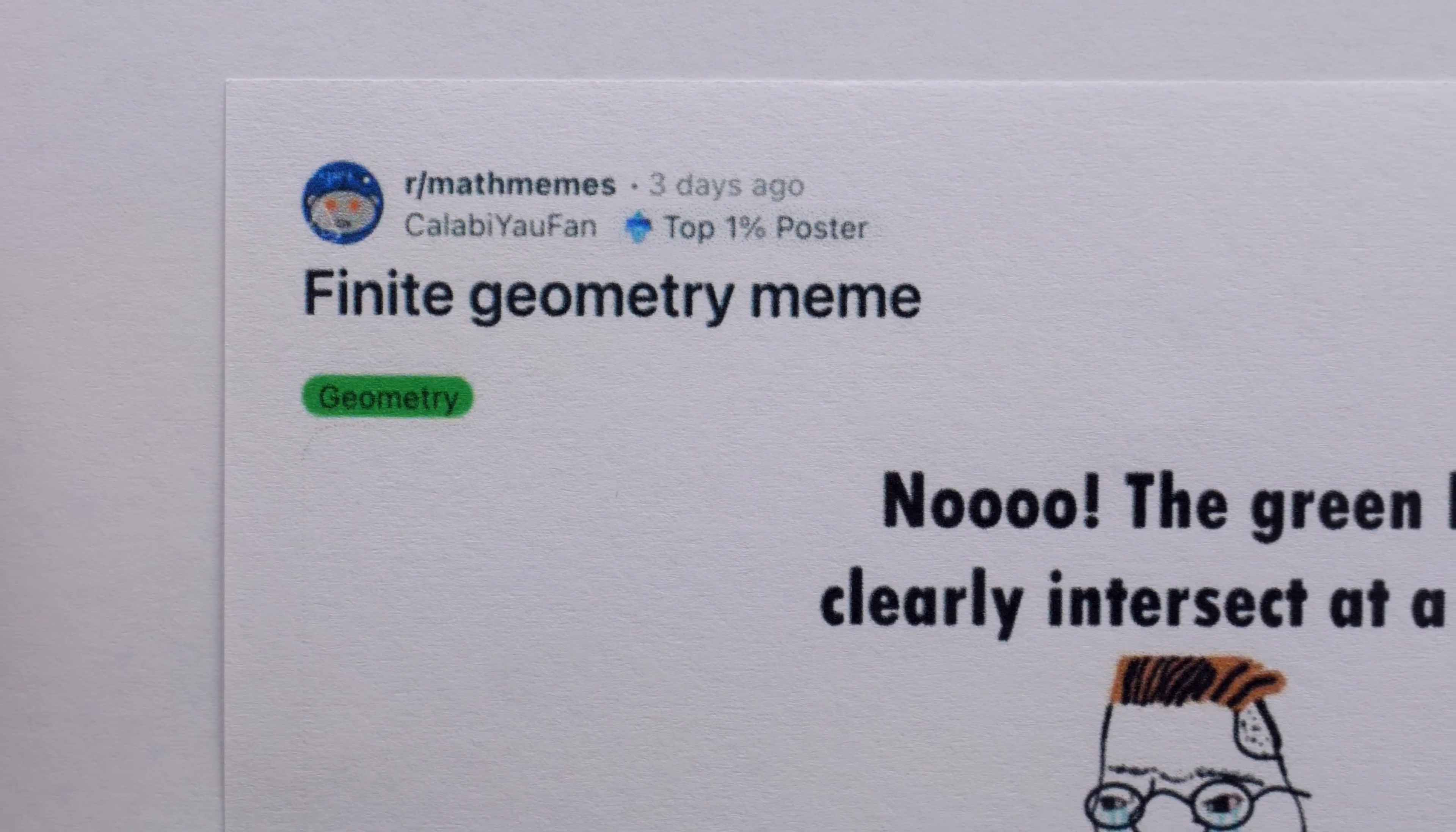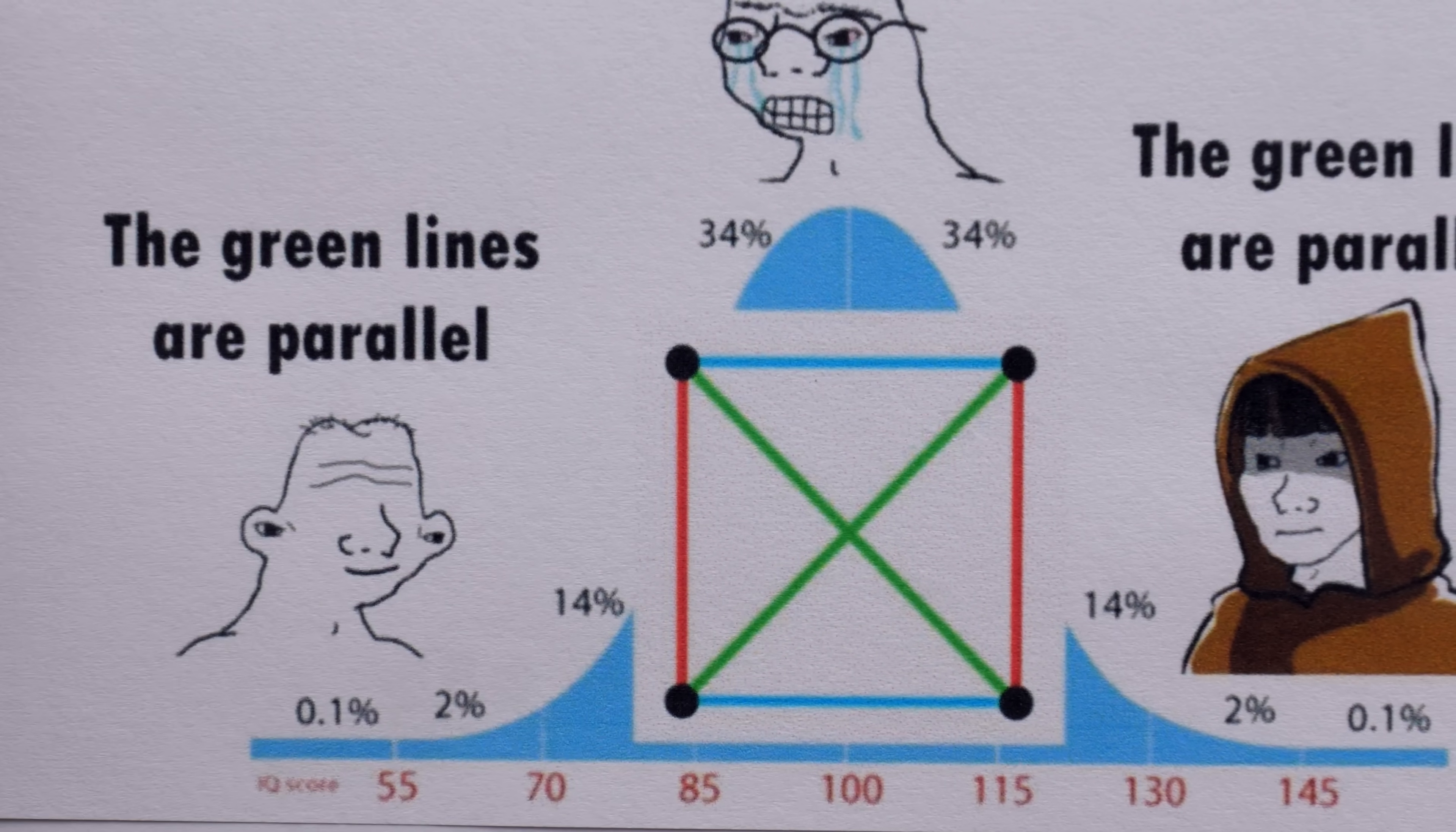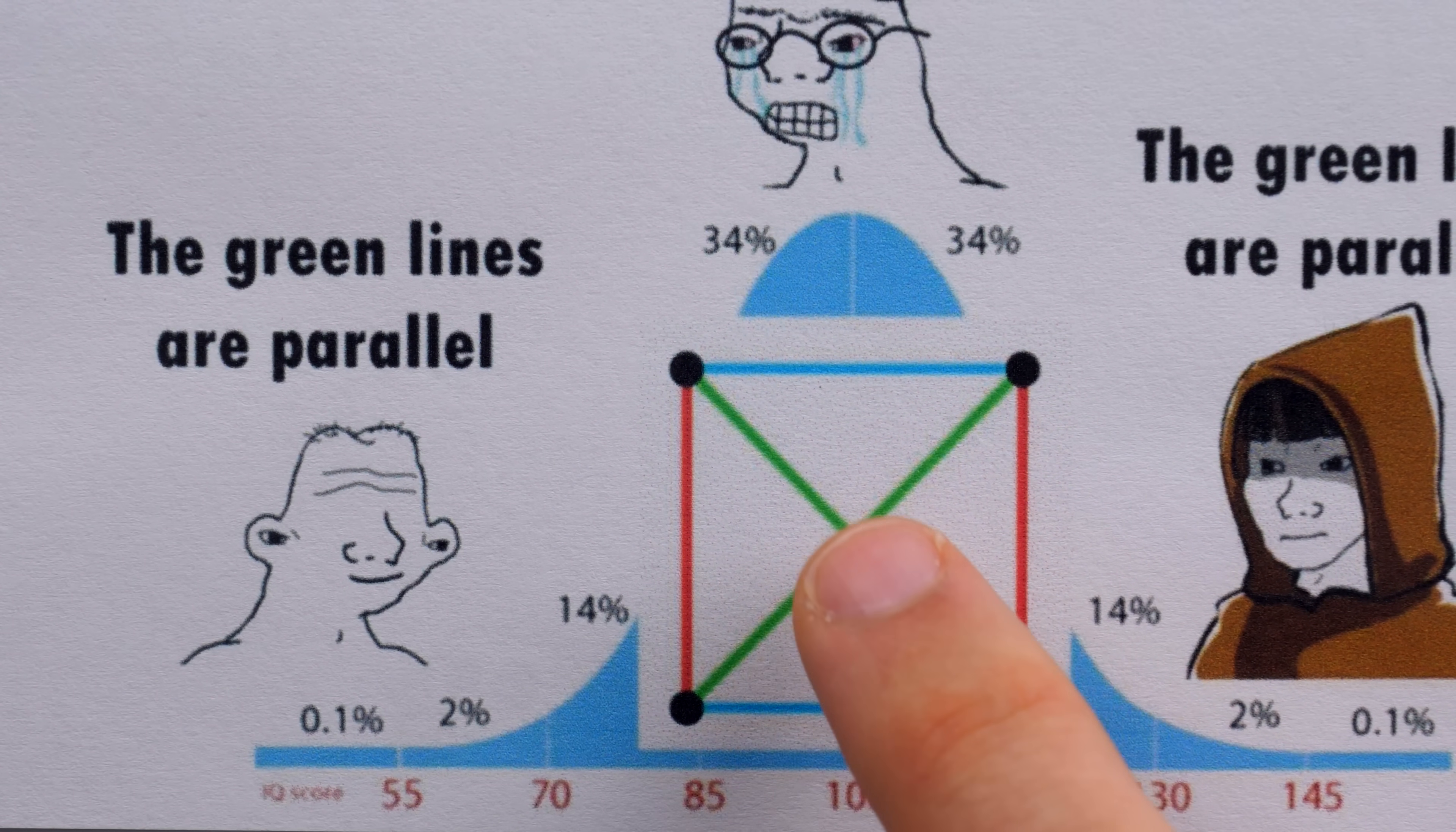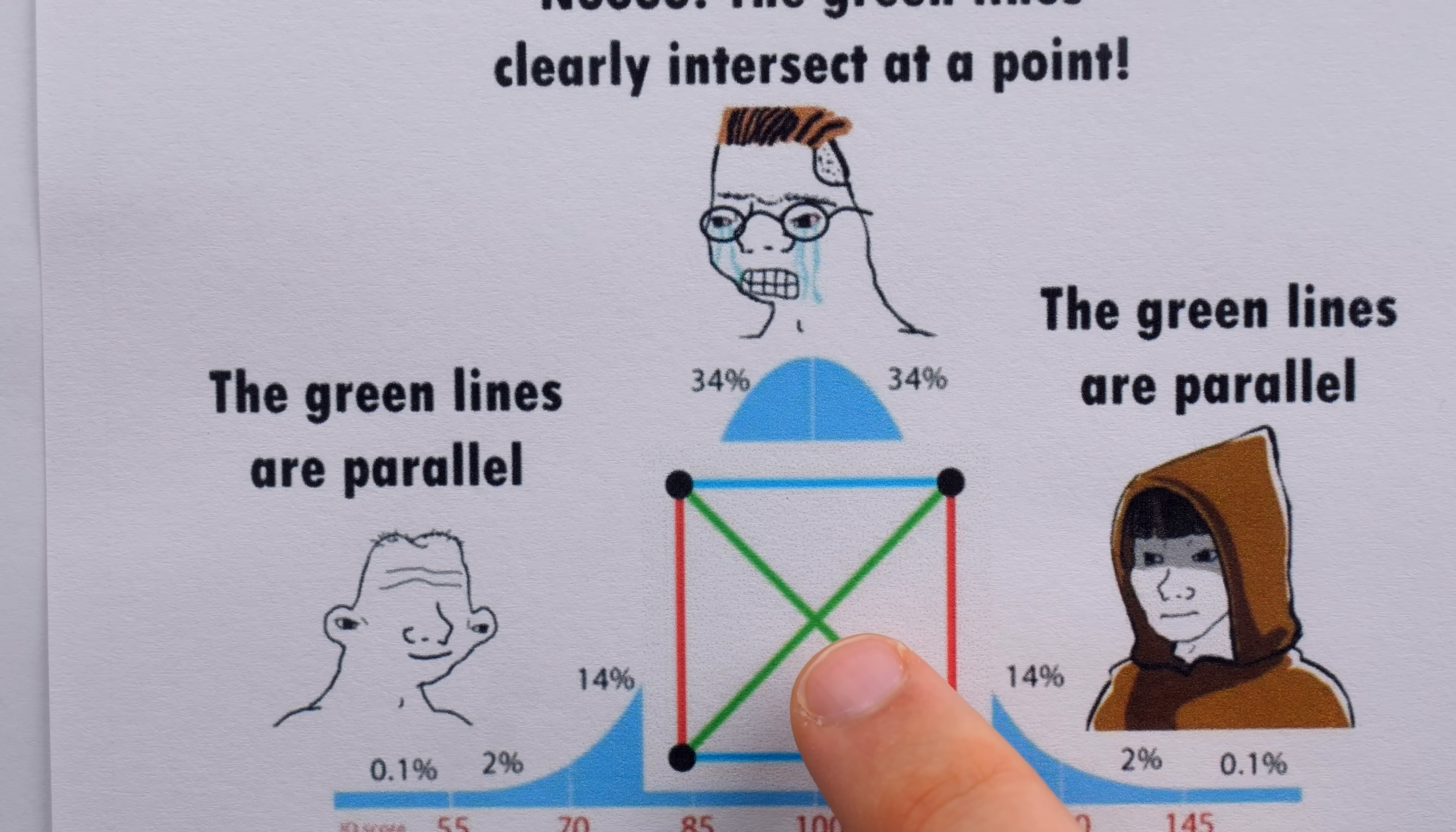Of course, everyone has some recollection of what parallel lines are from geometry class in school. Two lines are parallel if they exist in the same plane and do not meet, just like these red lines here. They exist in the same plane and they don't meet. On the other hand, it's clear that the green lines here also in the same plane do meet, and so a dumb guy might say the green lines are parallel. But your average fellow would be capable of correcting him and saying no, the green lines clearly intersect at a point.